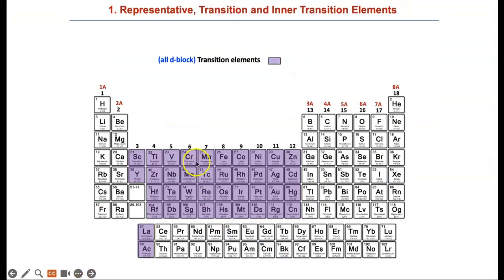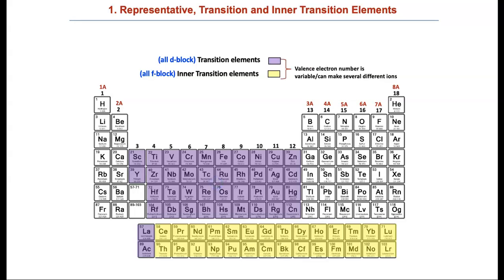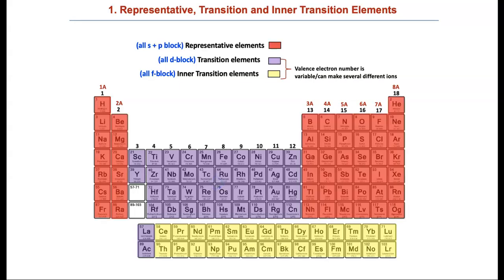In purple, I have shown you the D block elements, and in yellow, the F block elements, called inner transition elements. They both have variable numbers of valence electrons and can make several different ions. Here we have the S and the P block combined between columns 1, 2, 13 through 18, or group 1A through 8A. The A group numbers correspond to their valence electron numbers, hence the name representative elements. Their valence electron number is exactly the same as their A group number.